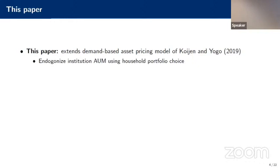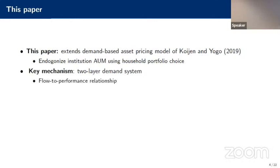We're going to use household portfolio choice to do this, and this creates the key mechanism in our model: a two-layer demand system. The first layer is driven by a flow-to-performance relationship where households are choosing funds, and then an inelastic asset demand where institutions and funds are choosing assets.